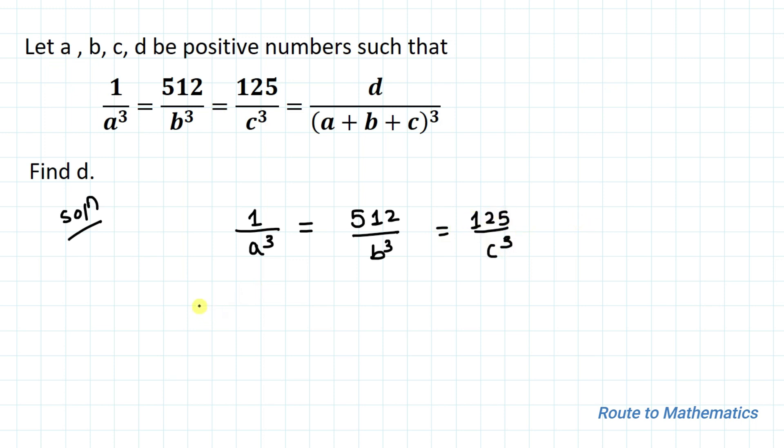In the next step, we can write this equation as 1/a³ = 8³/b³ = 5³/c³. This implies 1/a = 8/b = 5/c.